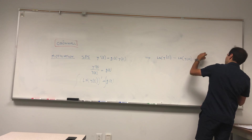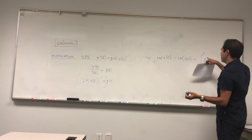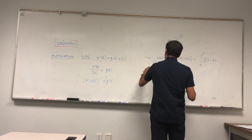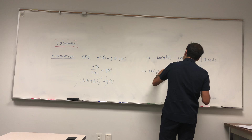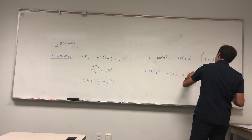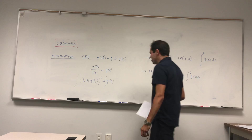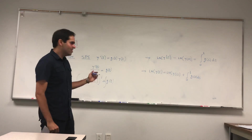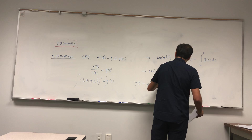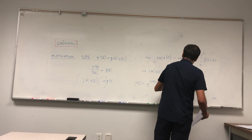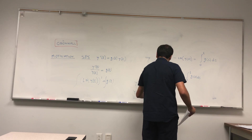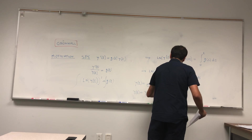So ln(y(t)) = ln(y(0)) + ∫₀ᵗ g(s) ds. To get y from that, you exponentiate: y(t) = e^(ln(y(0)) + ∫₀ᵗ g(s) ds), which gives y(t) = y(0)·e^(∫₀ᵗ g(s) ds). So if y solves this differential equation, we can express y simply in terms of the initial condition and the function g.